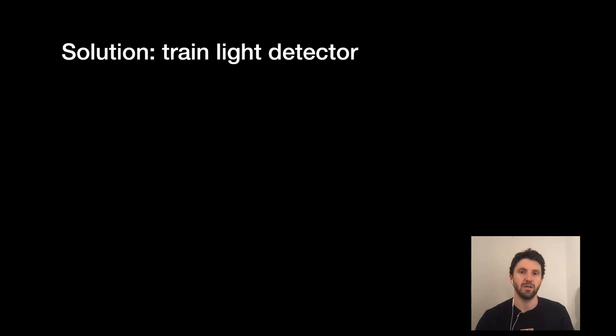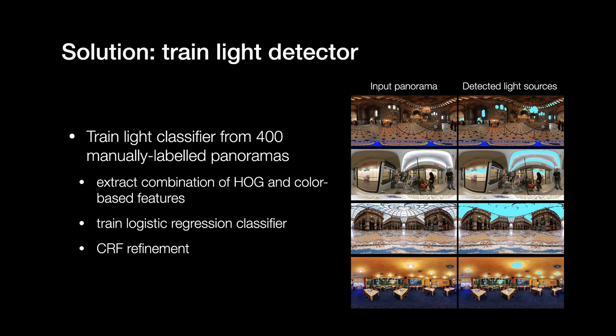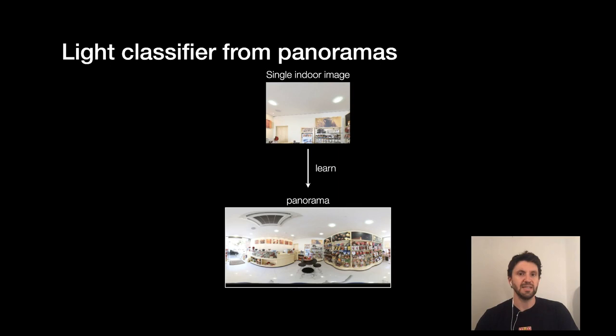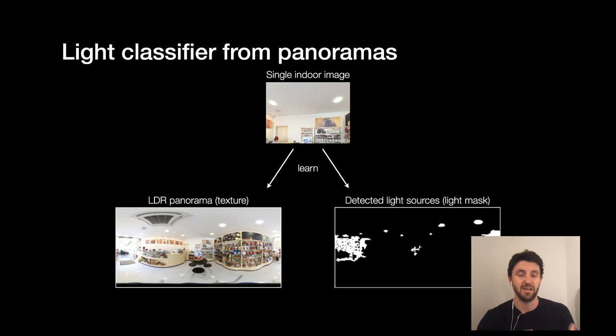So in order to do that, we're still going to want to work with our LDR database. So we'll train a simple light detector. And for this, we'll travel back in time a little bit and employ some old school computer vision techniques like hog and color based features. And we'll manually label 400 panoramas. And, you know, with a logistic regression classifier followed by a CRF refinement, we can get a pretty decent light detector that detects those light sources from indoor LDR panoramas. All right. So now what we're going to do is that instead of learning to predict the pano itself, we're going to learn to predict two things, the panorama on one side and the actual detected light sources that we're going to treat as a binary light mask.